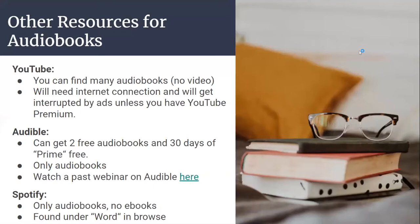Other resources for audiobooks. You can also use YouTube if you want to find certain audiobooks — meaning no video — but you'll need an internet connection, and it will be interrupted by ads unless you have YouTube Premium. For Audible, you can get two free audiobooks and 30 days for free. Audible only has audiobooks, and we also covered Audible in a past webinar. Also, Spotify has audiobooks but no e-books, and they're found under Words and Browse.